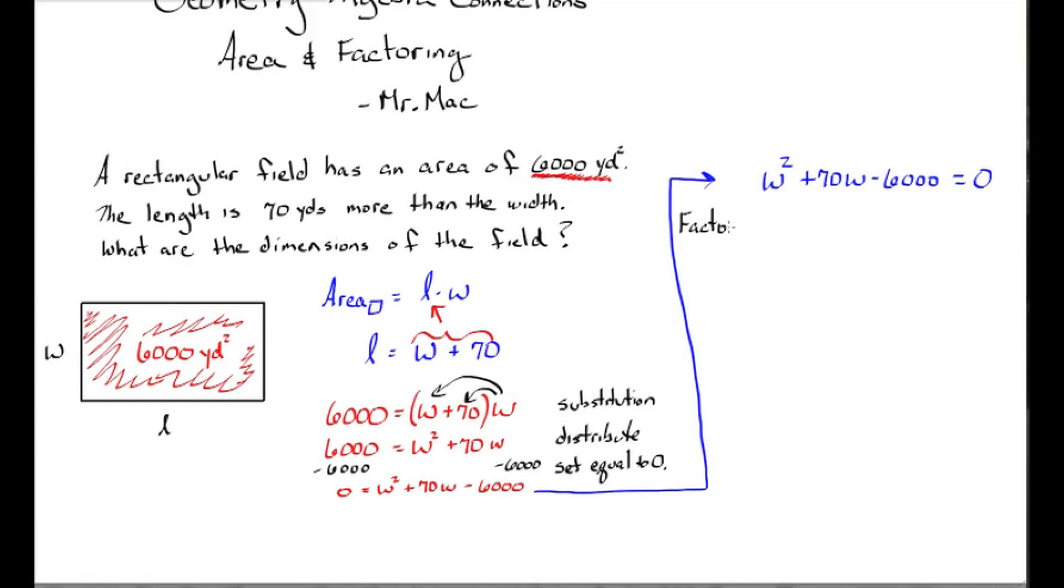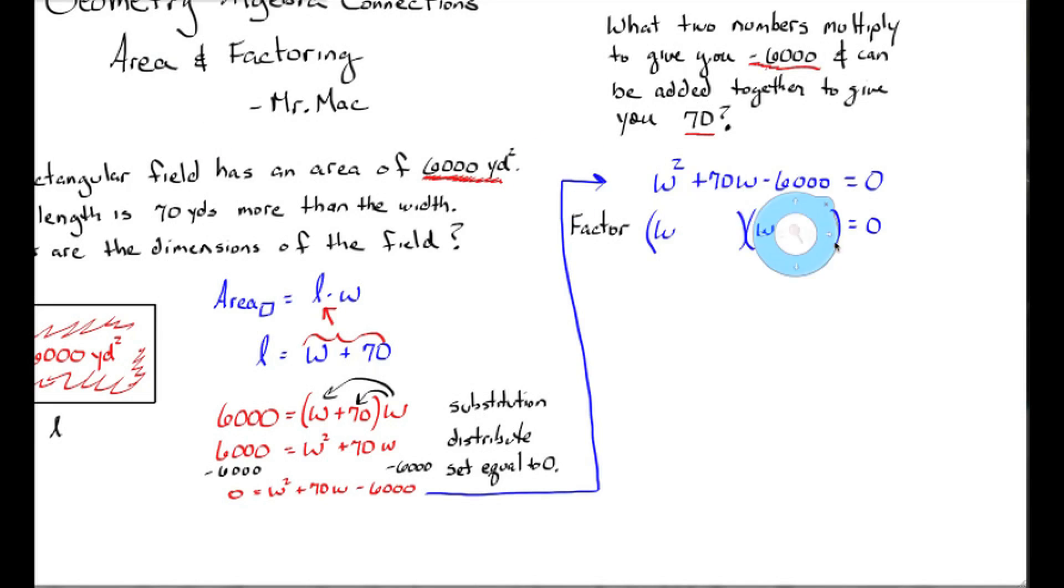So this trinomial I need to factor into two binomials. What two numbers multiply to give you negative 6,000 and can be added together to give you 70? There's several factors of negative 6,000, but only one is going to work for this problem.